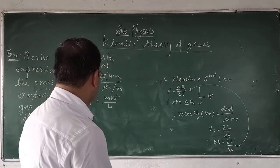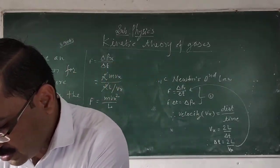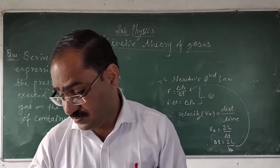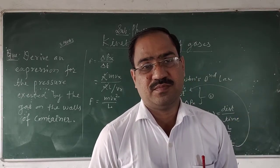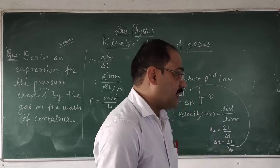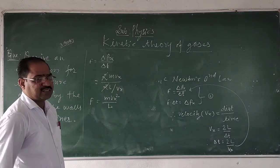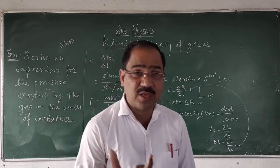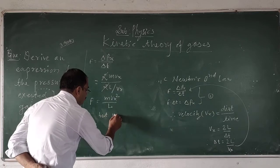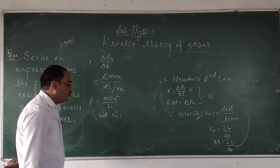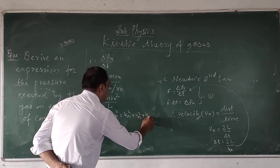This is the force, but here we have to derive the expression for the pressure, because here all the particles of the masses will be randomly moved inside the container or the cubical box. Here Vx is the velocity of the particle along the x-direction.